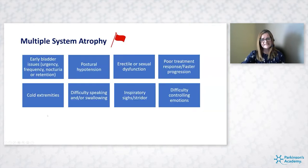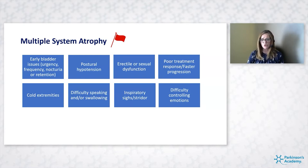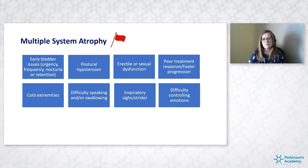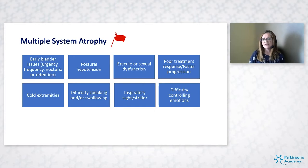For MSA there are a number of red flags, particularly around autonomic dysfunction. Look for early bladder urgency, frequency, nocturia, retention, and orthostatic hypotension — although we see that in Parkinson's too, with MSA it appears very early. For men particularly, ask about erectile dysfunction as an early autonomic feature. Cold extremities and discoloration of fingertips are worth observing. Have a look at hands and fingertips for colour changes.